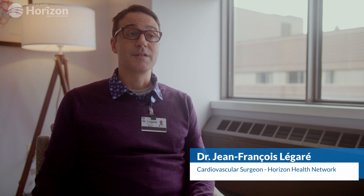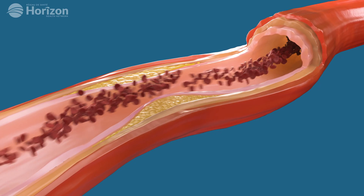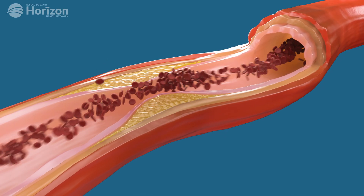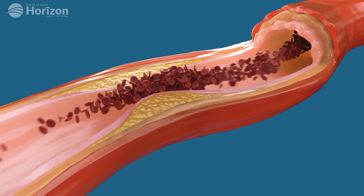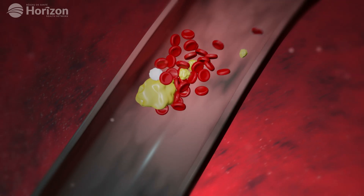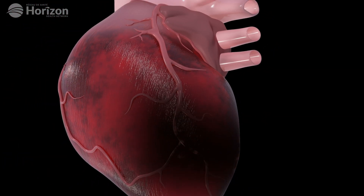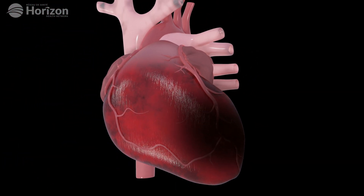Coronary artery disease is really the most common form of heart disease and in fact it is the number one killer of Canadians. It is characterized by the buildup of plaque inside the blood vessels that are on the surface of your heart, and that leads to things like angina and eventually heart attack. From a public health point of view, it is something very important.